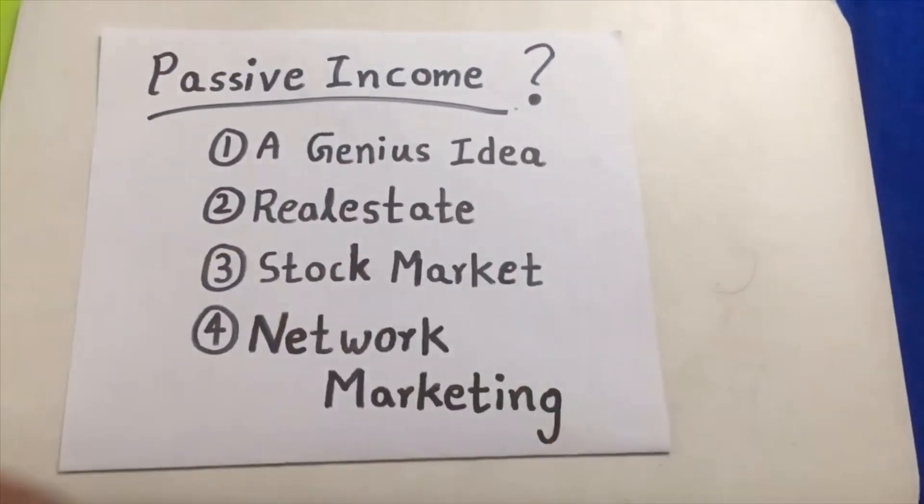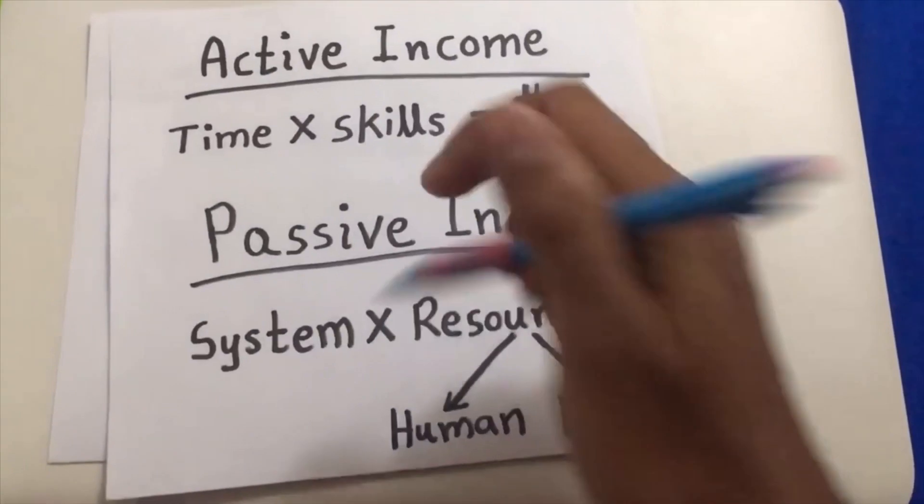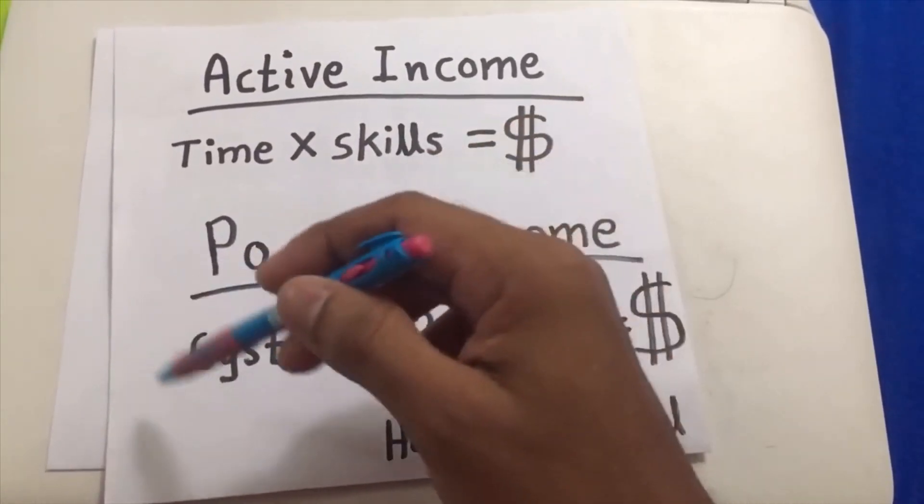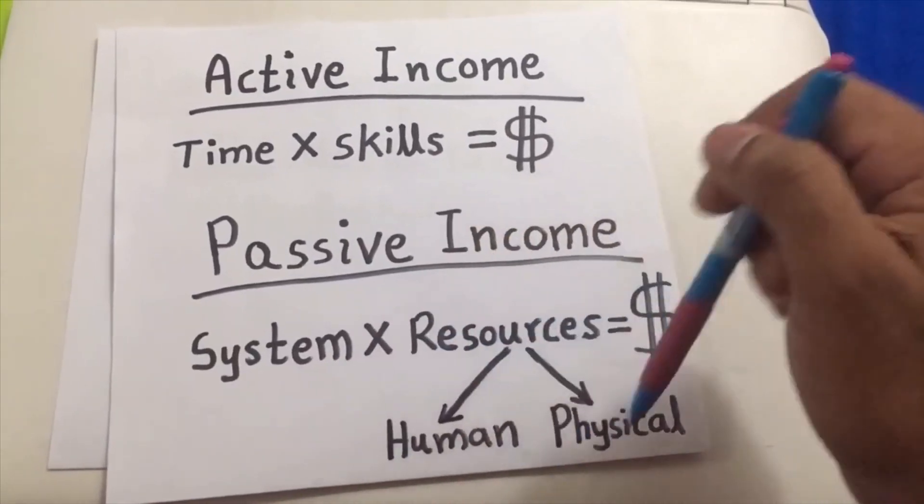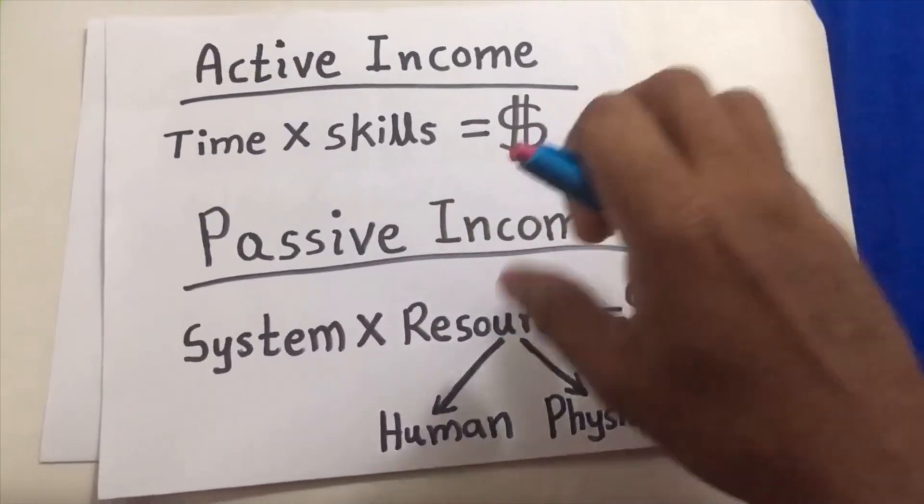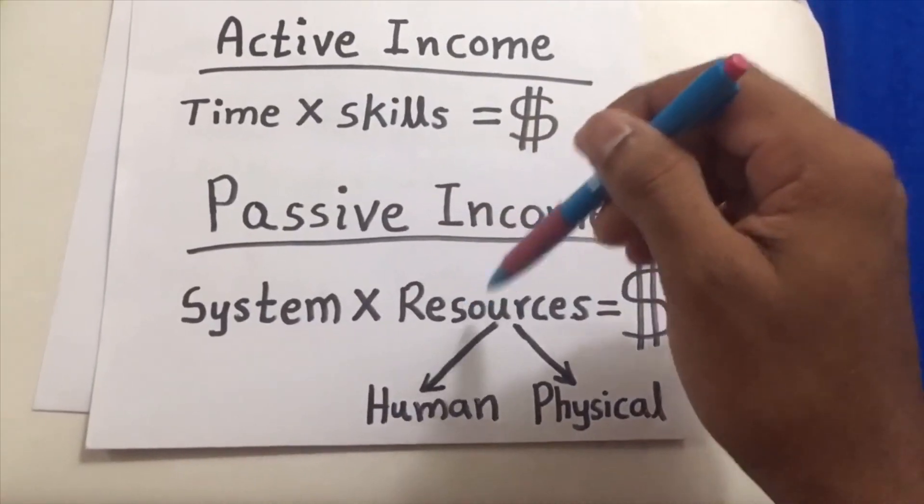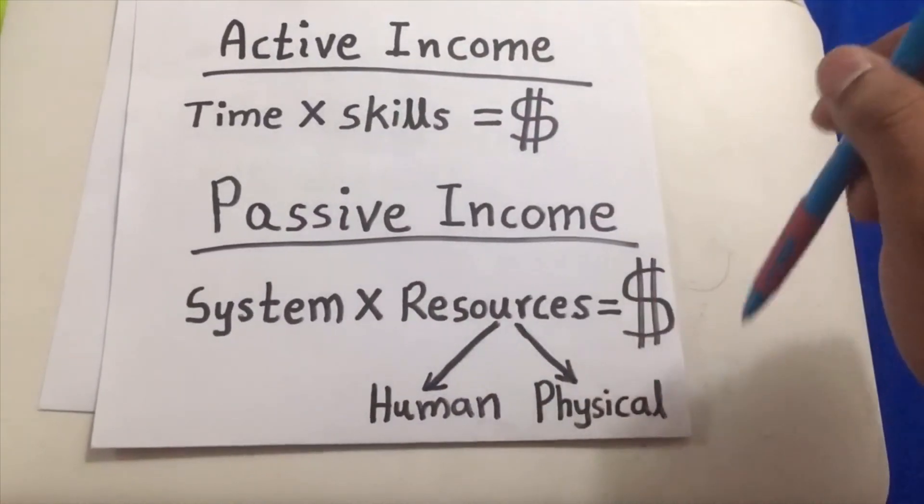There will be a time where there's a system by a network marketing company. This system will be run by a lot of people. Basically we call them the downlines. A lot of people will be working with the system and will be generating a lot of money for you.